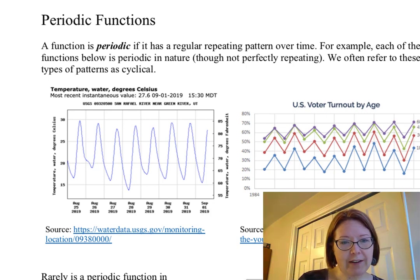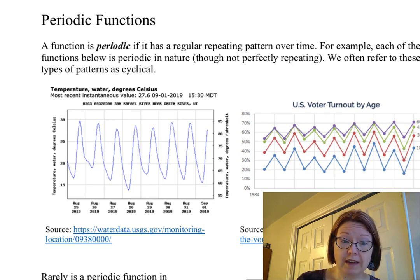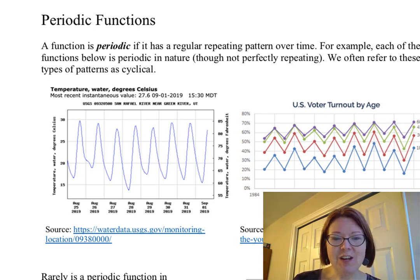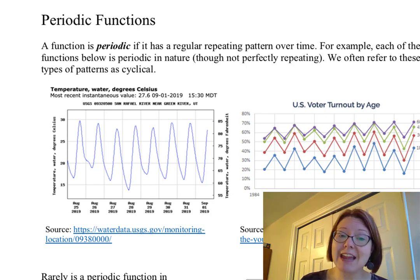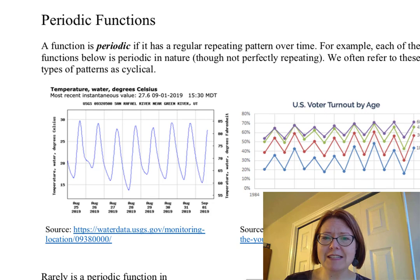The first graph shows the temperature of the water in degrees Celsius for the San Rafael River near Green River, Utah. The graph is shown for one week, and every day there's a low and a high. It cycles from a low to a high, making a nice smooth curve as the temperature changes. It doesn't go to the same high and low every day, but it is periodic in that it cycles up and down in roughly the same pattern.